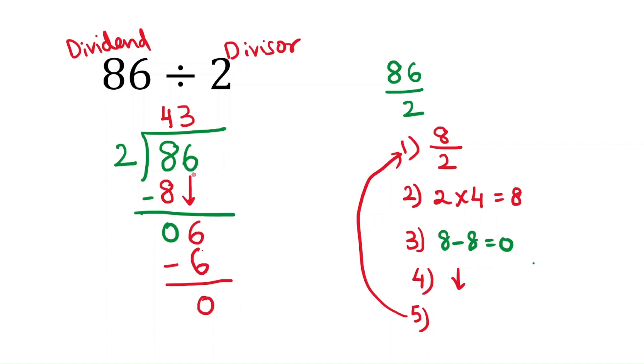So here no more digits to divide. 0 is called remainder and 43 is called the quotient.